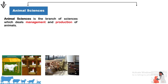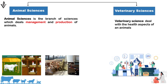First of all, animal sciences is a science which deals with the management and production of animals, whereas veterinary sciences deals with the health aspects of animals. So the subjects concerned with management and production are included in animal sciences, whereas the subjects concerned with health are included in veterinary sciences.